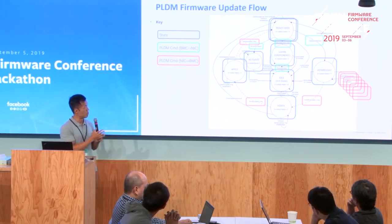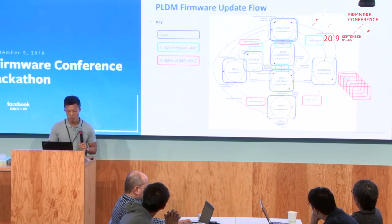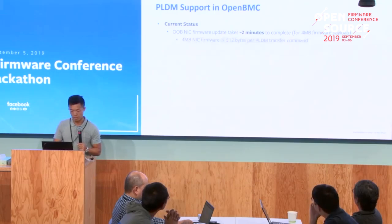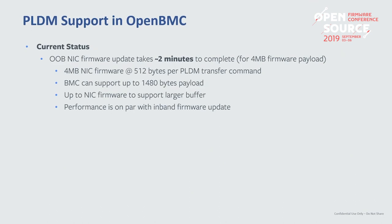Here are some performance numbers from our fleet for NIC firmware. With the latest kernel, PLDM over NCSI over netlink takes about two minutes to transfer approximately 4 MB. This is done using a 512-byte buffer per PLDM transfer. This number could improve because NCSI supports up to close to 1500 bytes per transfer, but it depends on the device firmware — the device I tested only supported up to 512 bytes per transfer. Using a larger buffer of 1KB or even 1.5KB should reduce the time further. In-band and out-of-band performance are very similar.